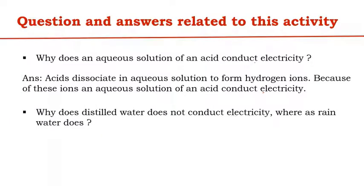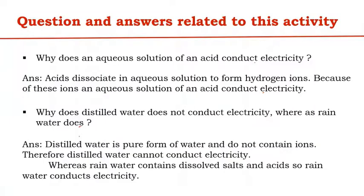Second question: why does distilled water not conduct electricity, whereas rain water does? The answer is: distilled water is a pure form of water and does not contain ions; therefore distilled water cannot conduct electricity. Whereas rain water contains dissolved salts and acids, so rain water conducts electricity.